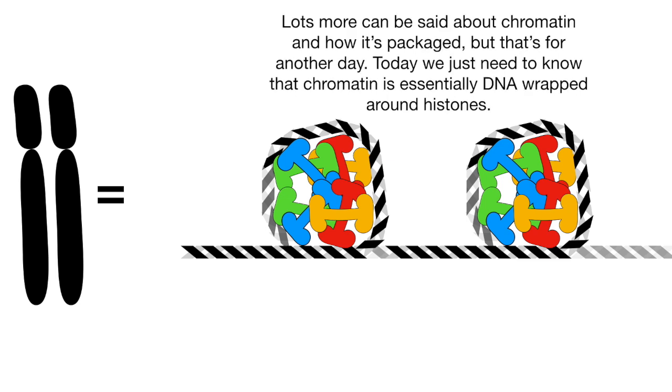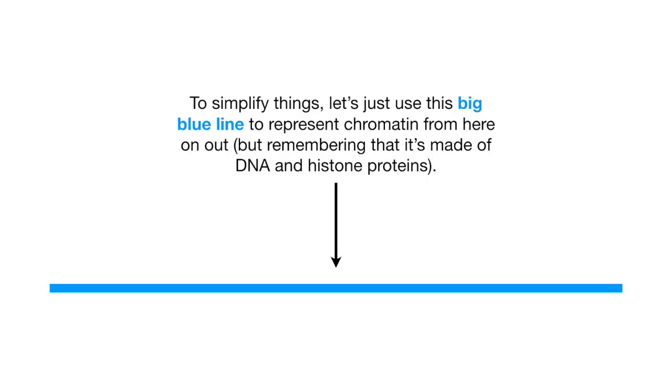Lots more can be said about chromatin and how it's packaged, but that's for another day. Today we just need to know that chromatin is essentially DNA wrapped around histones. To simplify things, let's just use this big blue line to represent chromatin from here on out, but remembering that it's made of DNA and histone proteins.